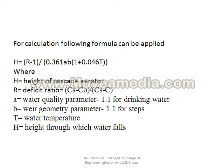B is the weir geometry parameter, which is 1.1 for steps. Various geometries exist — trays, sprays, and others — but for the cascade aerator with steps, B = 1.1. T is the water temperature; for design purposes we take T = 20°C, which is the minimum. H is the height through which the water falls.